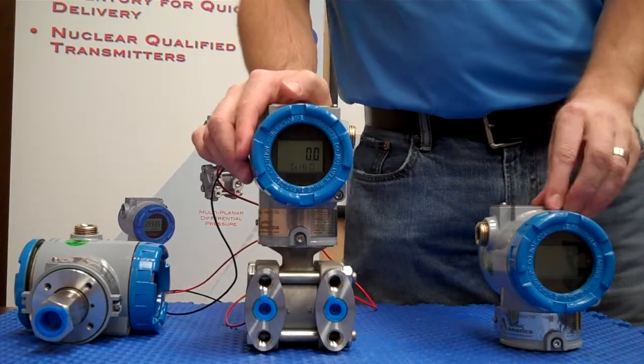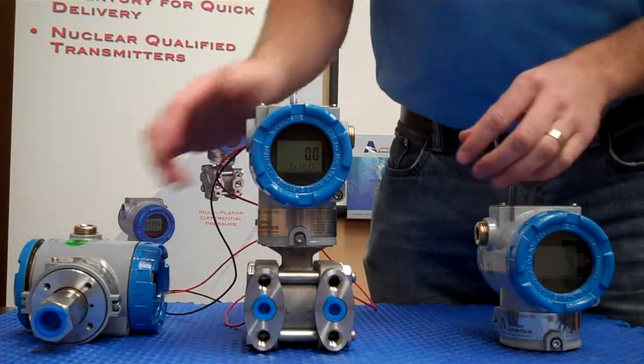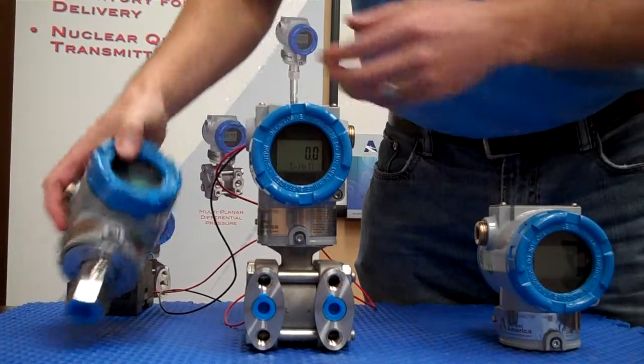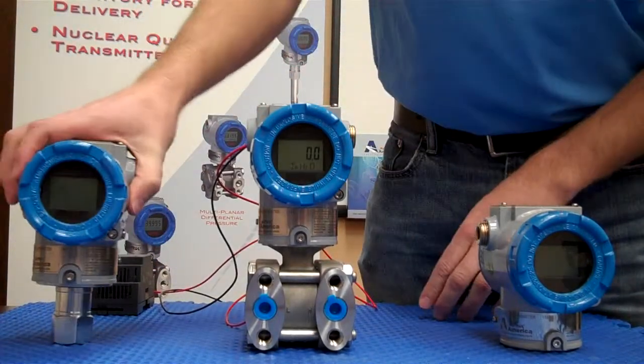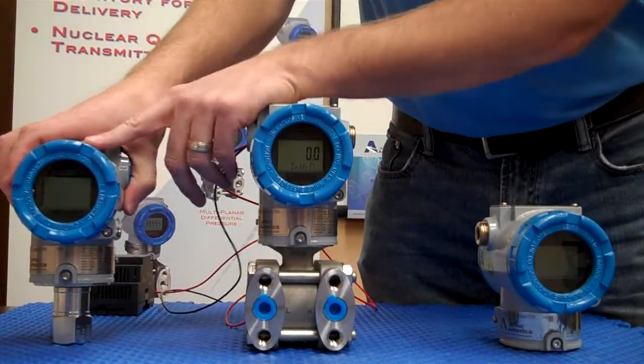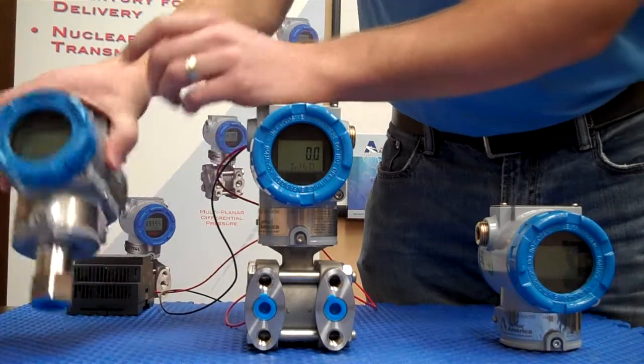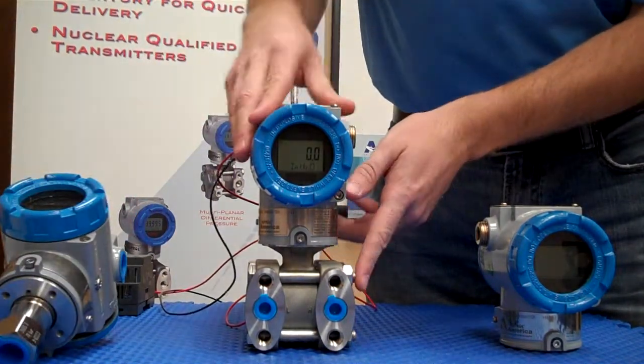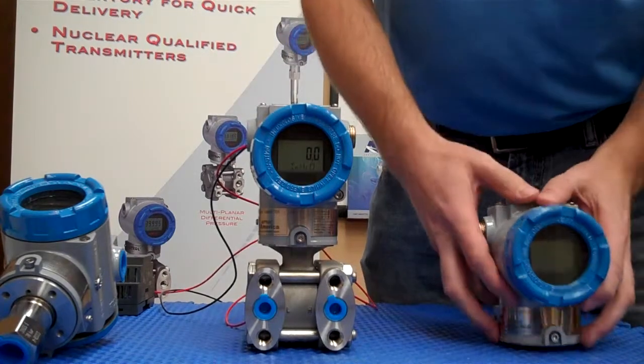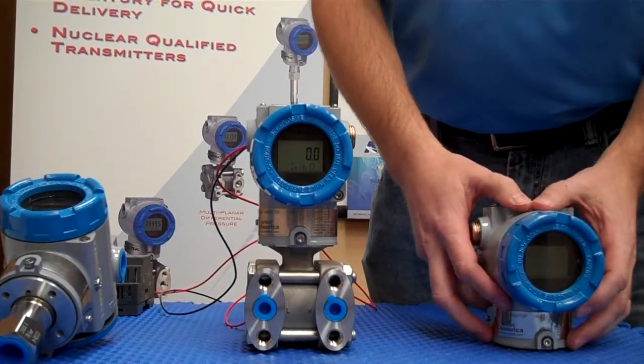We're here today to introduce you to the Autrol family of transmitters. We're looking at three different distinct varieties: a piezoelectric for pressure, a capacitance available for pressure and DP, and a universal temperature transmitter.